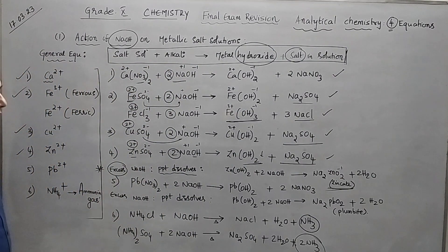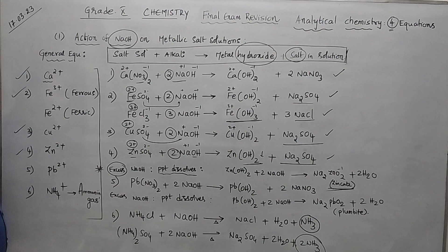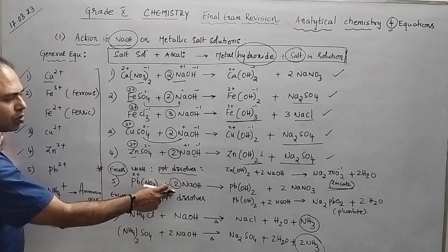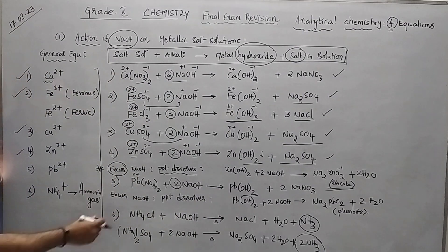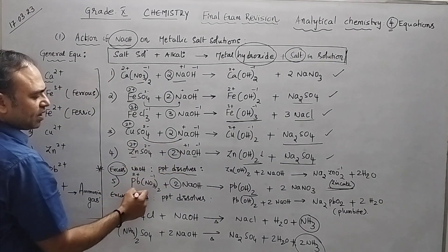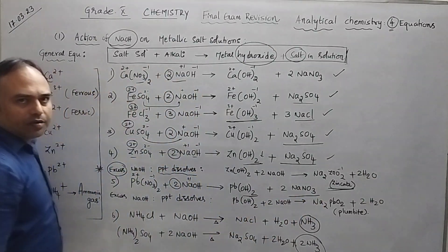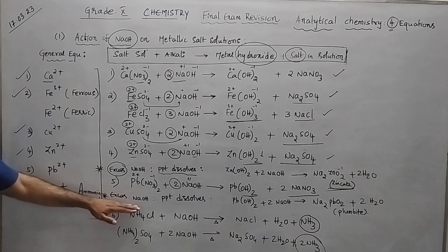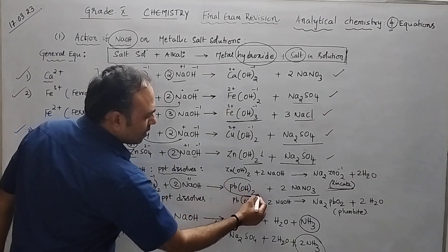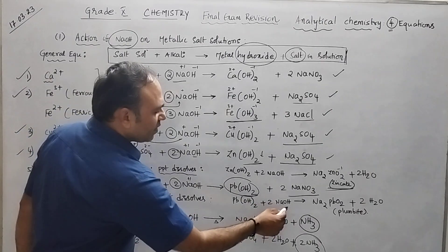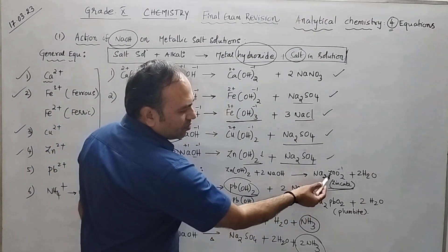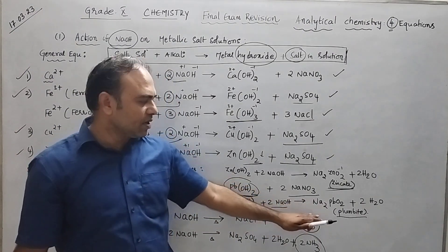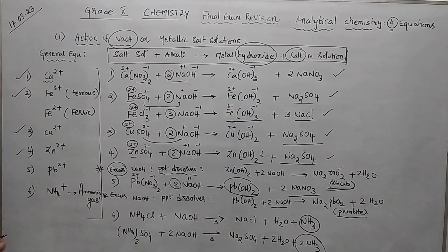The fifth example: lead nitrate. Lead has 2+, so the coefficient of NaOH is 2, giving Pb(OH)₂. The remaining NO₃⁻ and Na⁺ give NaNO₃ (sodium nitrate). Again, if excess NaOH is added, the precipitate dissolves. Unlike zinc giving zincate, with lead (plumbum) you get sodium plumbide. Make a note of that equation.